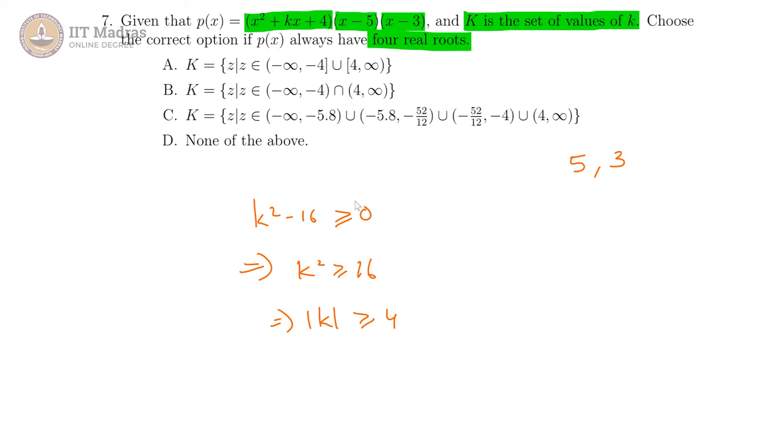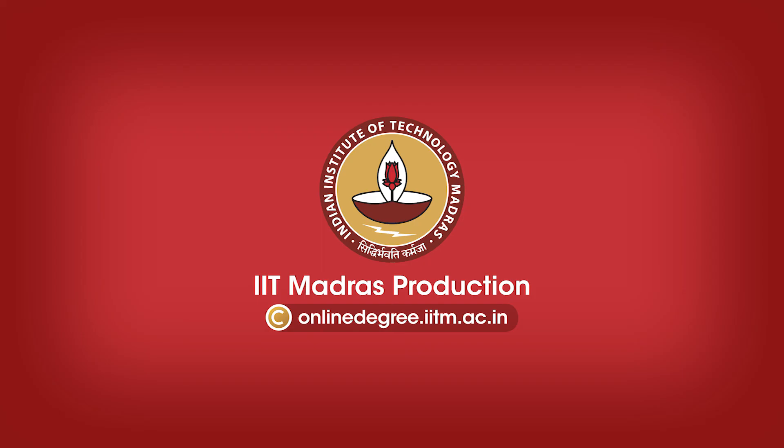What corresponds to this is option A, because you go from minus infinity to minus 4, and then 4 to plus infinity, their union. And 4 and minus 4 are with closed intervals, therefore they are included.